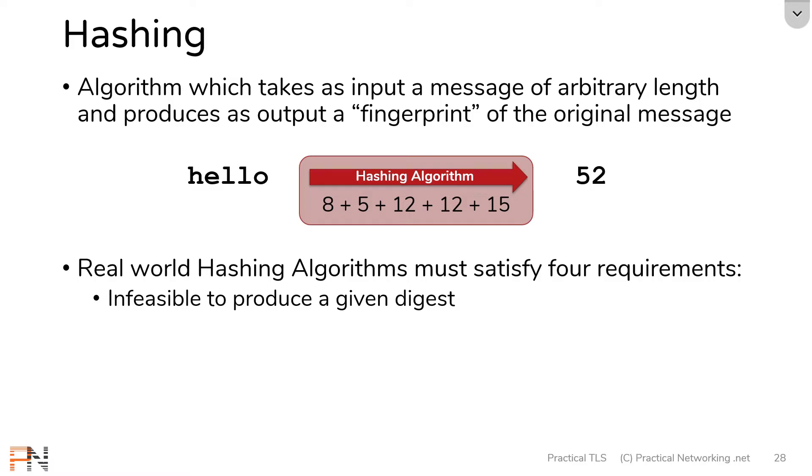The next requirement for a real world hashing algorithm is that it should be impossible to extract the original message. The idea is if I give you a digest, it should be impossible to reverse engineer that back into the original message. In fact, hashing is sometimes referred to as one-way encryption. The idea is you can encrypt something, but you can never decrypt it. Technically, our letter addition algorithm does meet this requirement, because if I give you 52, there's no way for you to reverse engineer that back into hello, because there could be so many different words that add up to 52.